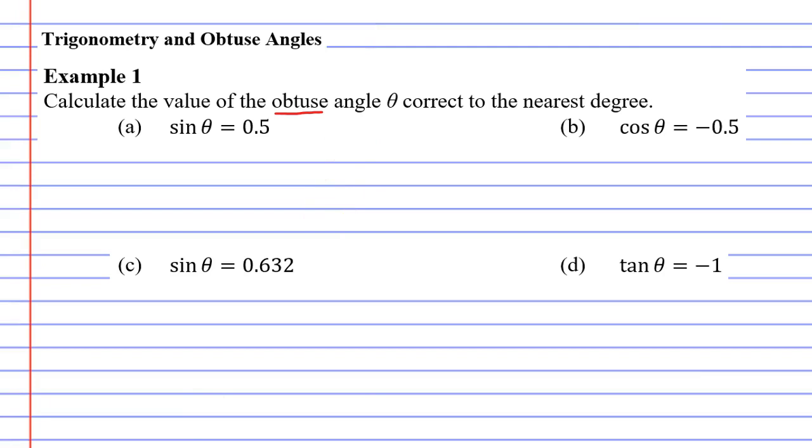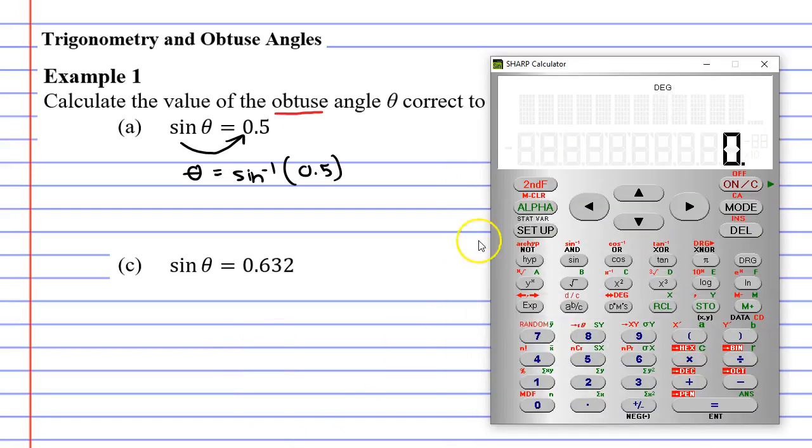Let's start by solving question a the way we would normally solve it. Normally if we want to find our angle theta we would bring sine to the other side and we would use the inverse of sine. So it would look like this: theta equals sine with a little negative 1 and in brackets 0.5. Let's just solve this like we normally would solve it.